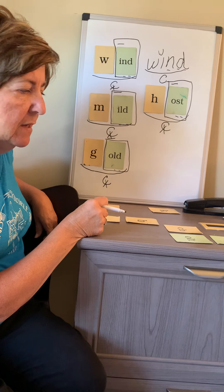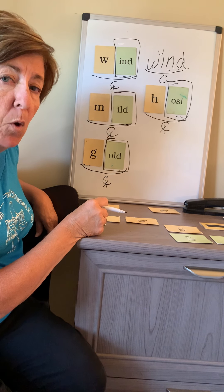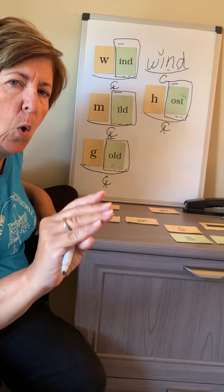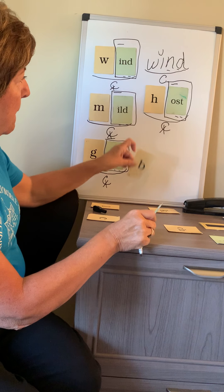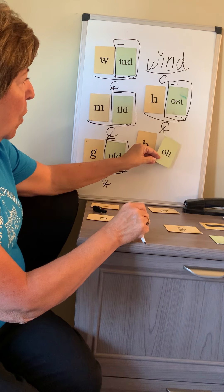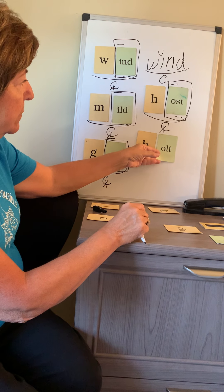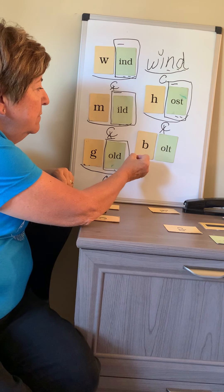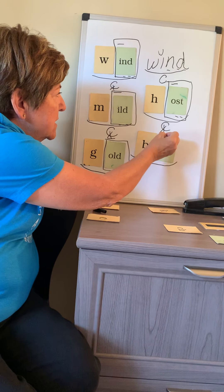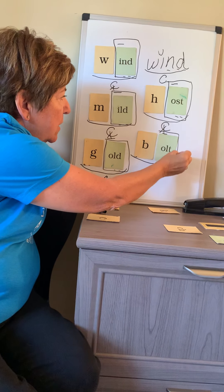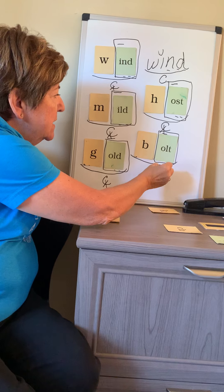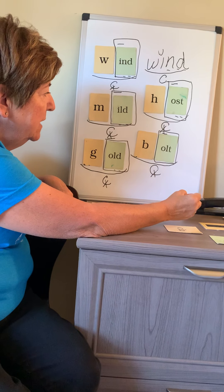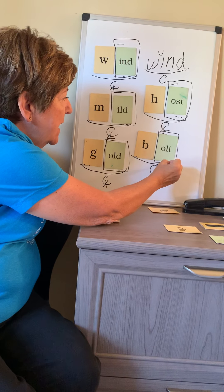Let's build another one. How about the word BOLT — like a bolt of lightning. B, glue your fingers together, -OLT. Let's mark it. It's one syllable. It's a long O. Box that glued sound. It is a closed exception since it's -OLD — looks like it should be short, but it's long. And it has an L-T blend.